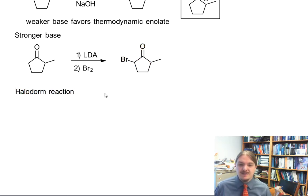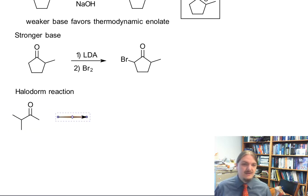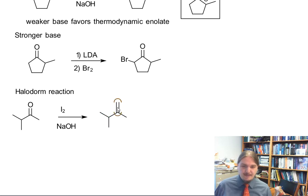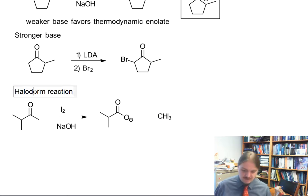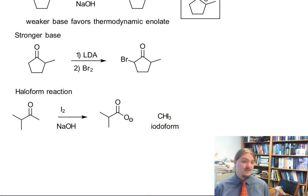I want to talk about something called the haloform reaction, and I've been saving my iodine for this. Iodine and chlorine work in this reaction the same way that bromine does, and all of the halogens behave well here. This product CHI3 is iodoform, like CHCl3 is chloroform, and CHBr3 would be bromoform.